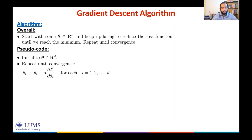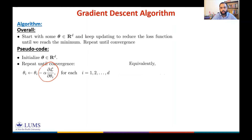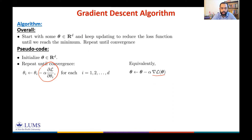In each iteration, update each component θᵢ by subtracting the learning rate times the partial derivative of L with respect to θᵢ, for each component. Equivalently, in vector form: θ ← θ − α∇L(θ), where the gradient stacks all partial derivatives into a vector of the same size as θ, indexing all partial derivatives.